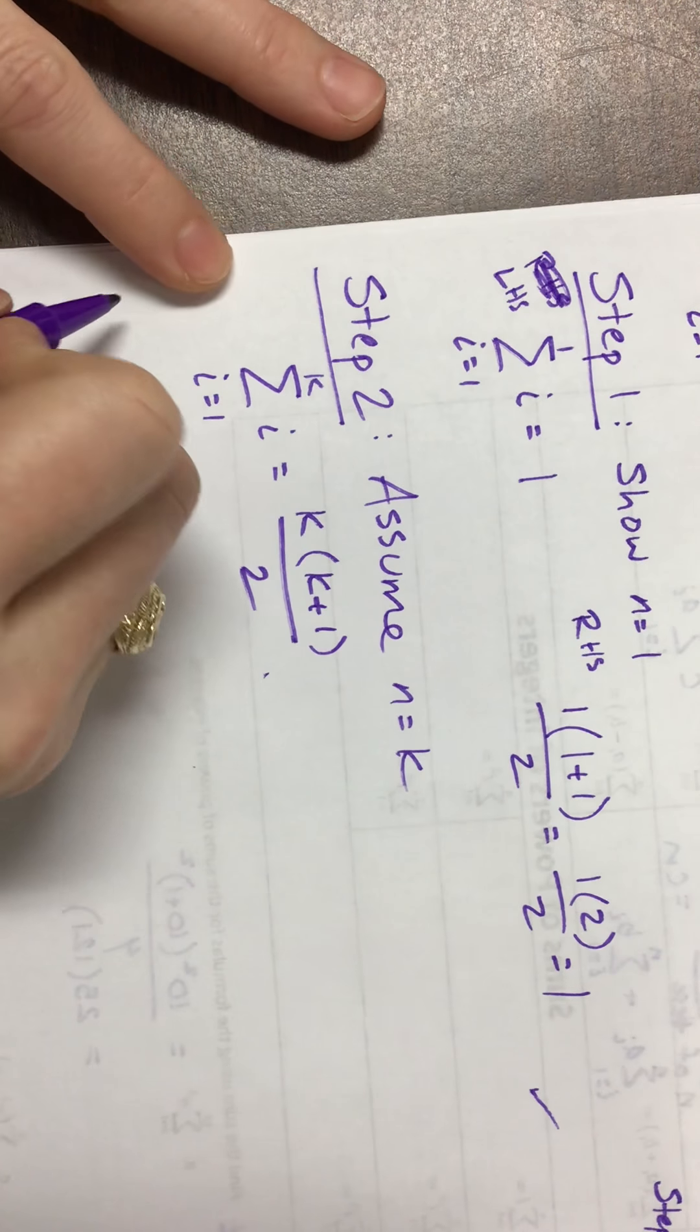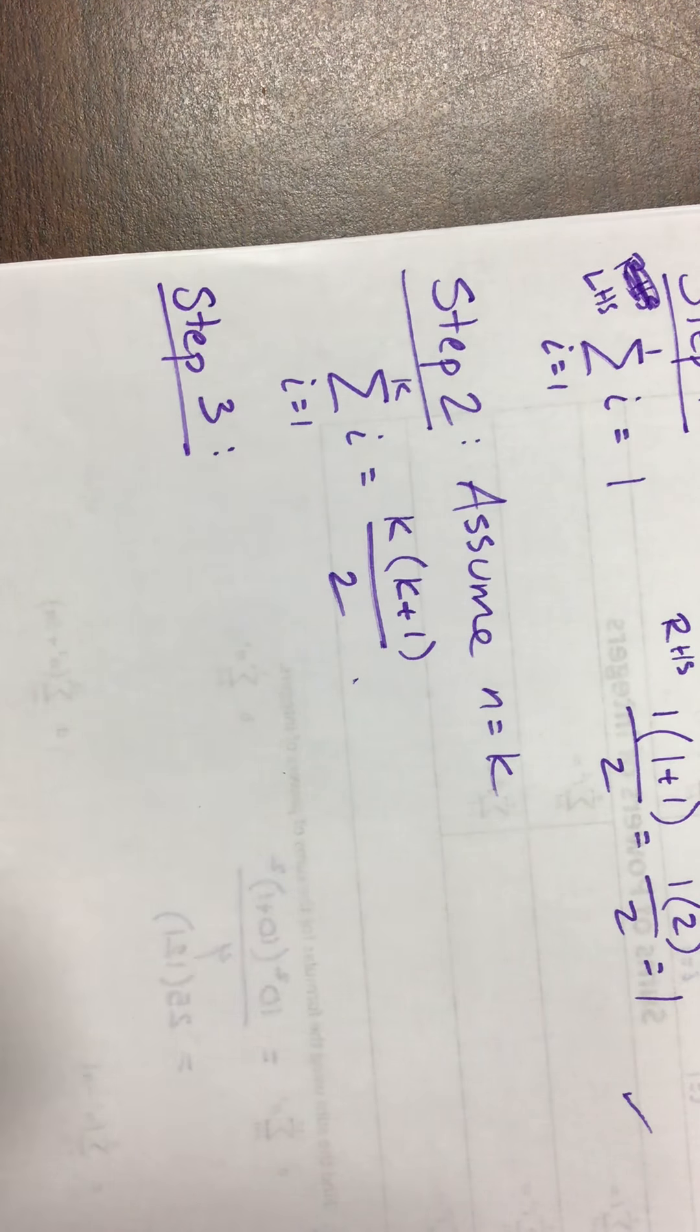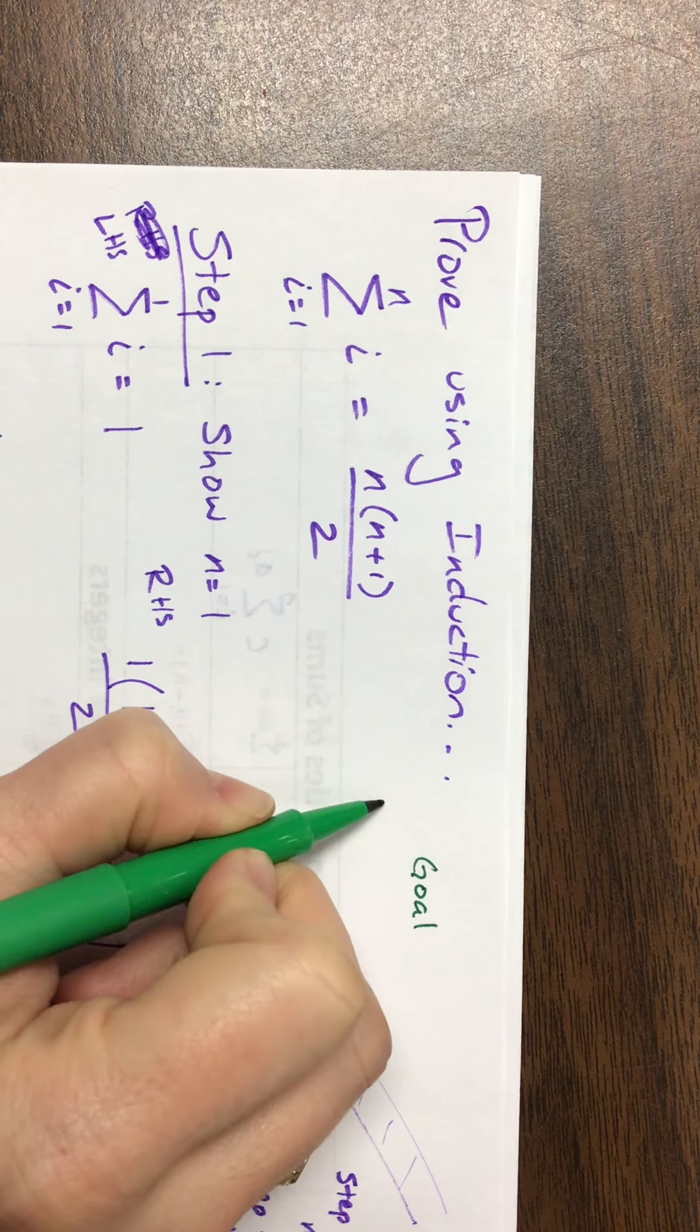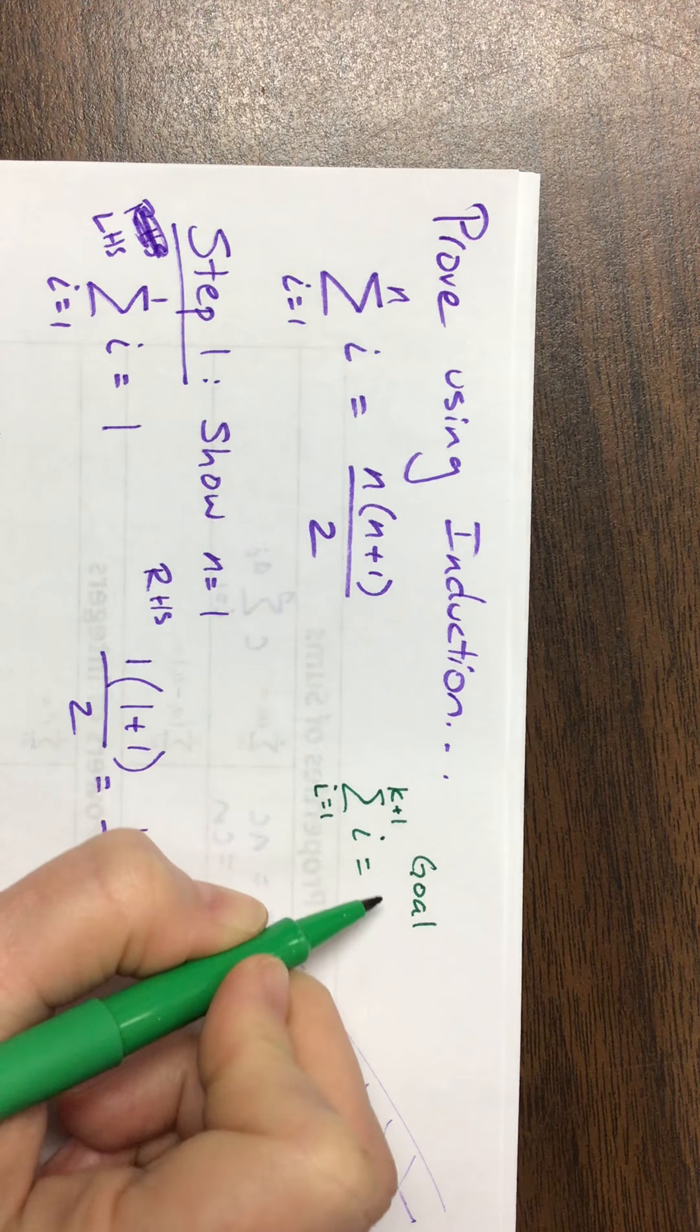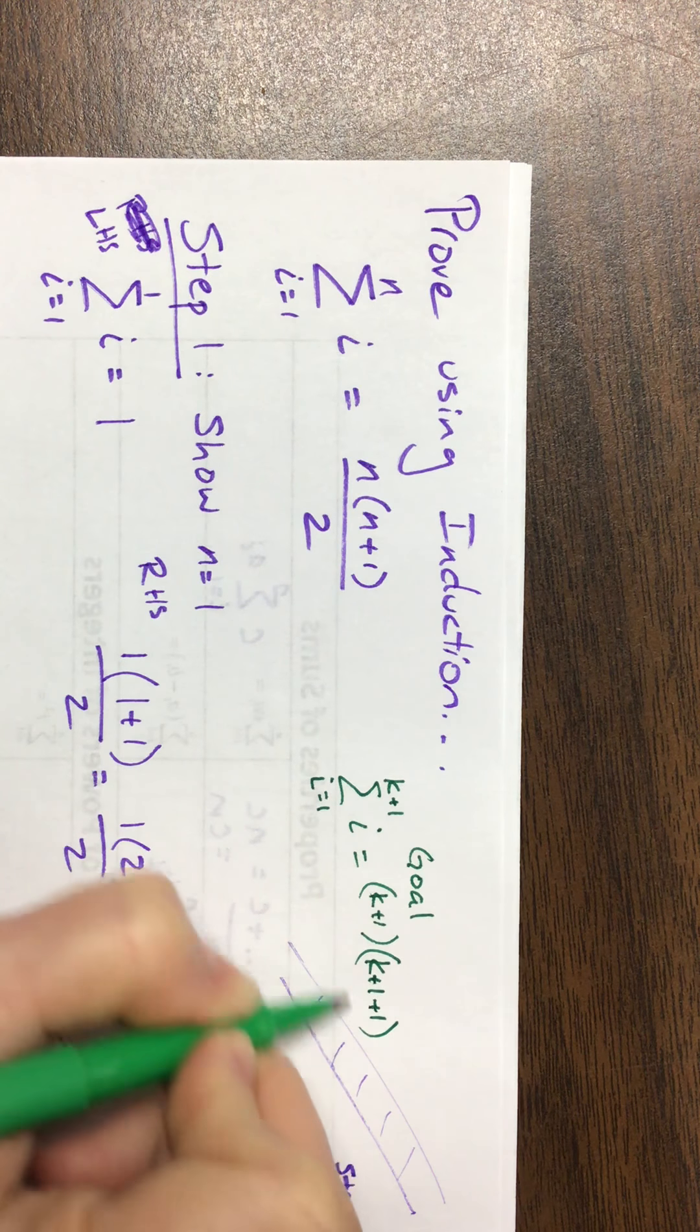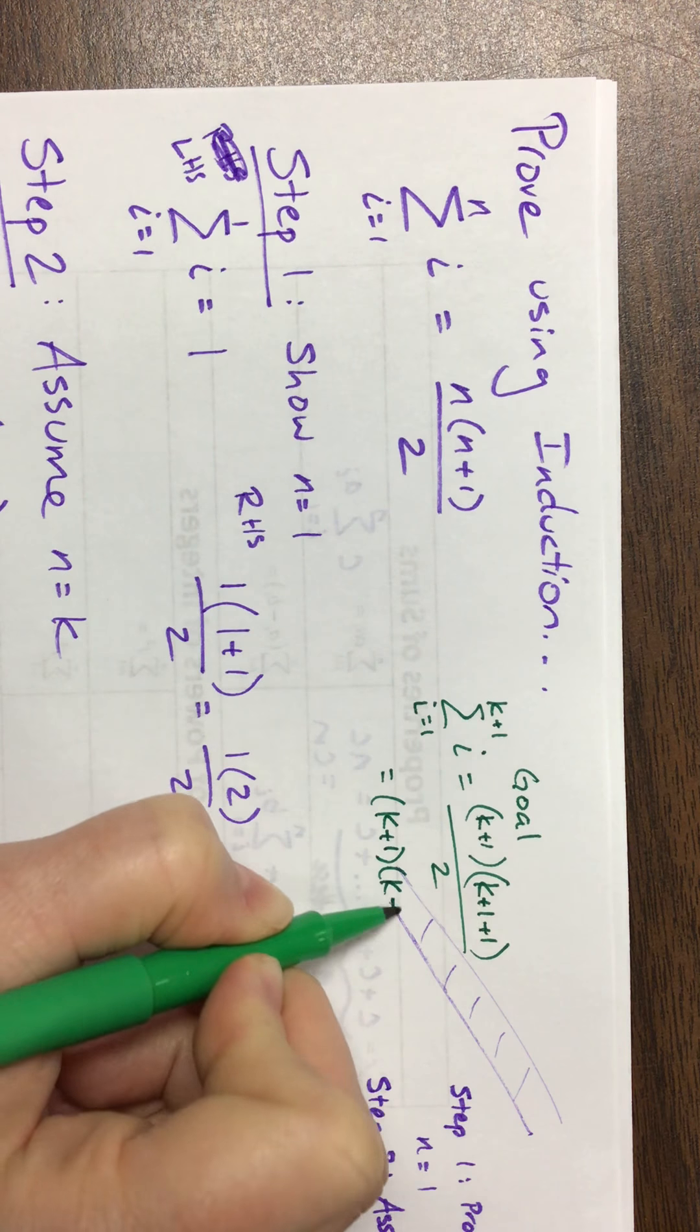Okay, so now step three is where the real work comes in. And what I like to do before I start step three is I like, off to the side, sometimes over the top, I'll write down my goal. Okay, and so my goal is to show that the sum as i goes from 1 to k plus 1 of i, that would be equal to, well, k plus 1 times k plus 1 plus 1 over 2.